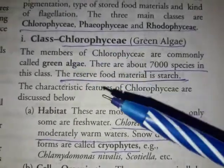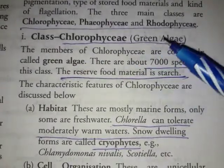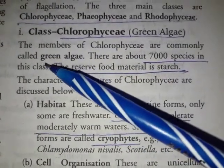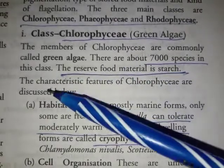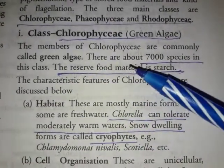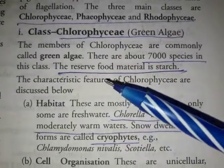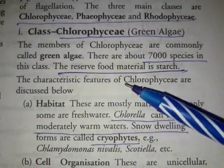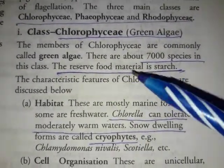Chlorophyceae literally means the green algae. The members of Chlorophyceae are commonly called the green algae. There are about 7,000 species in this class. The reserve food material is starch.